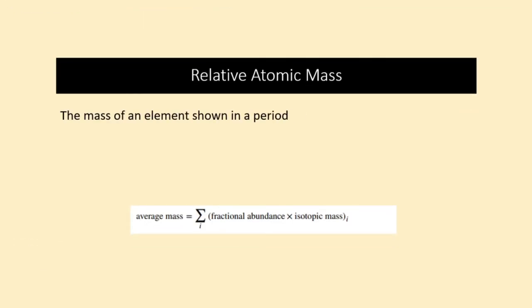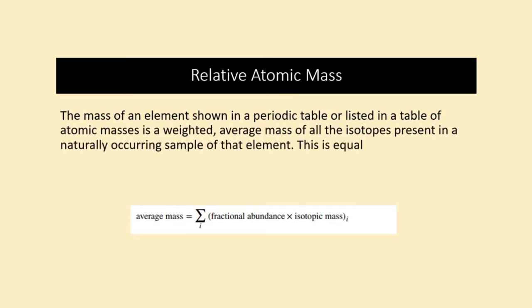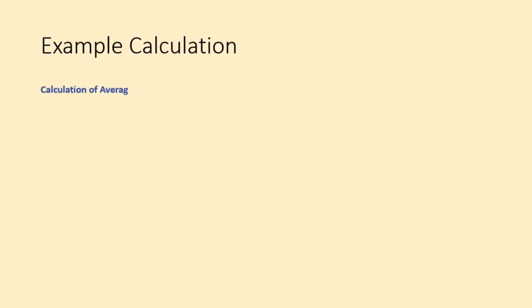The mass of an element shown in a periodic table or listed in a table of atomic masses is a weighted average mass of all the isotopes present in a naturally occurring sample of that element. This is equal to the sum of each individual isotope's mass multiplied by its fractional abundance. Take a look at this example calculation.